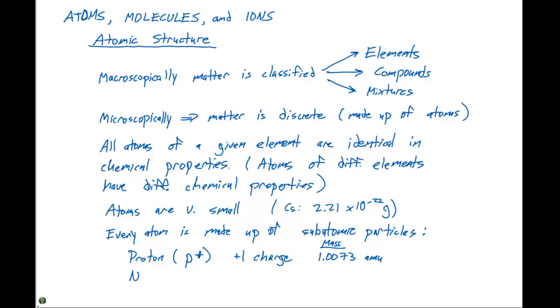A neutron is abbreviated with a lowercase n with a zero subscript. It is neutral, so it does not have a charge. It has a mass of 1.0087 atomic mass units.